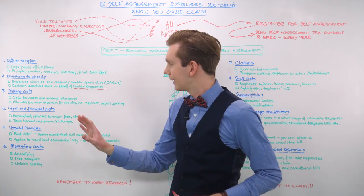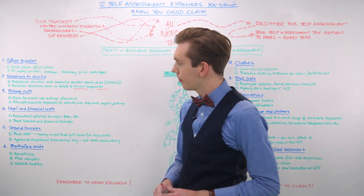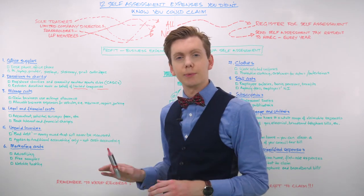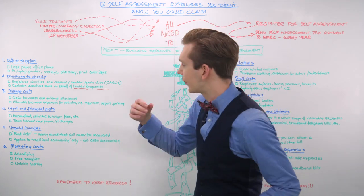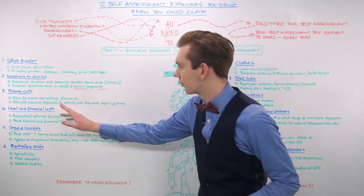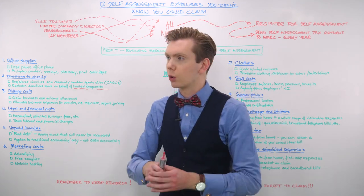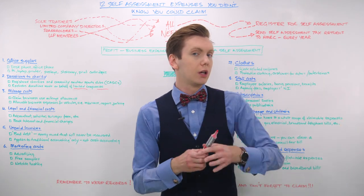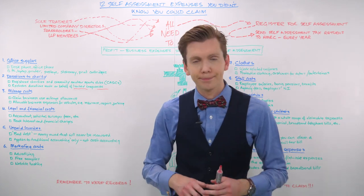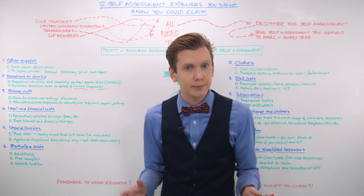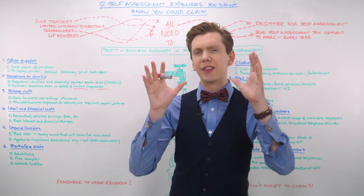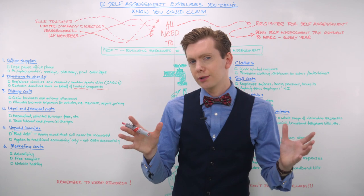Number four, legal and financial costs. When calculating your self-assessment expenses, you should also include any costs associated with hiring an accountant, a solicitor, a surveyor, maybe an architect, or basically any professional that you've paid to assist you. Likewise, you can claim costs for professional indemnity insurance premiums, as well as a range of other bank and insurance costs.